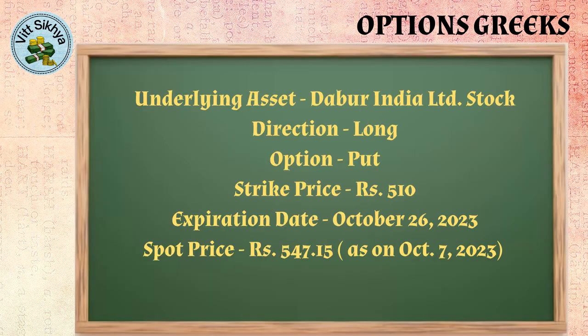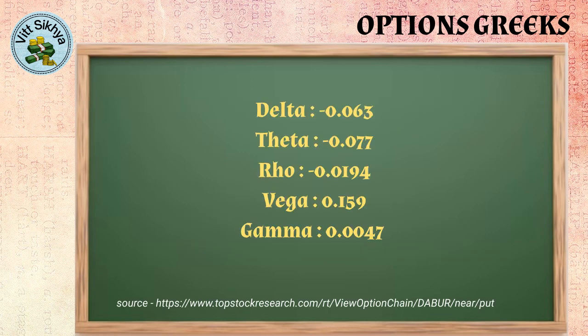Let's take the example of Dabur India Limited. We are going long on a put option with a strike price of Rs. 510 and an expiration date of October 26, 2023. The spot close is Rs. 547.15 as on October 7, 2023. The Greeks for this position are: delta negative 0.063, theta negative 0.077, rho negative 0.0194, vega positive 0.159, and gamma negative 0.0047.